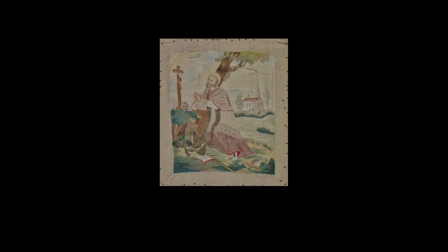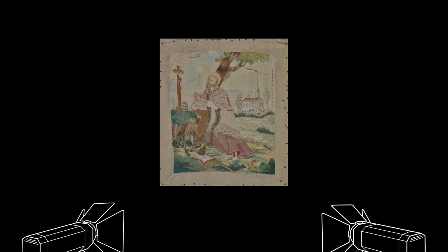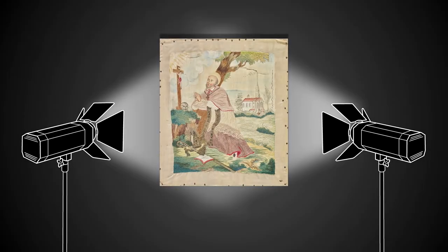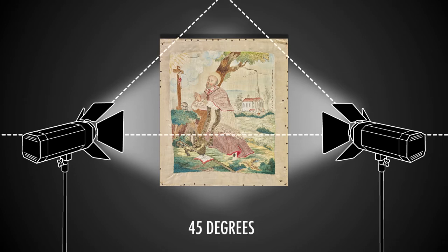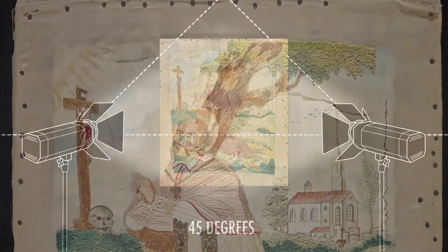Normal light is the most common type of lighting used in heritage institutions. It is often used for general photography, preservation imaging and beauty shots for catalogues. With lights positioned at a 45 degree angle on both sides, it evenly illuminates the surface and reveals the true colors and tones of an object.